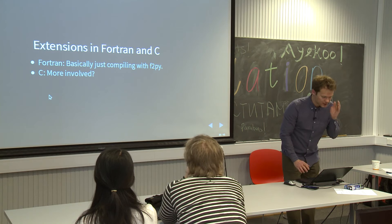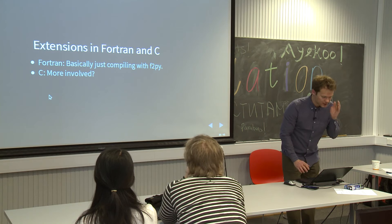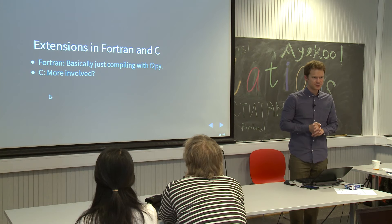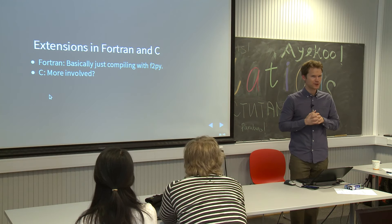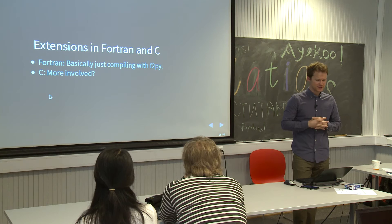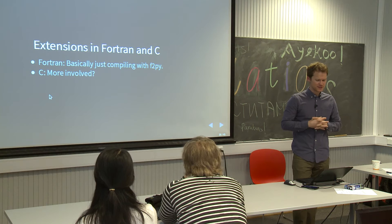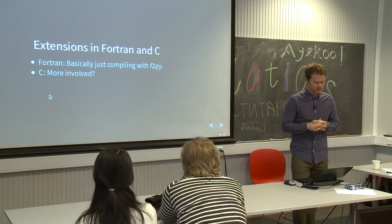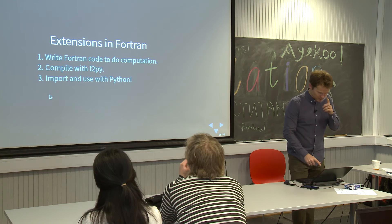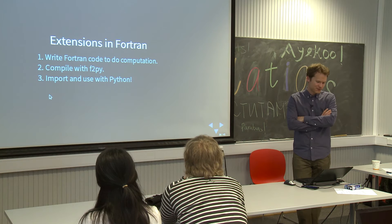In Fortran it's actually very easy — basically just writing pure Fortran and compiling it with a special tool called F2Py, which comes with NumPy. The steps are: write code in Fortran to do the computation, compile it with F2Py, and then import it and use it in Python. I would say it's pretty straightforward.